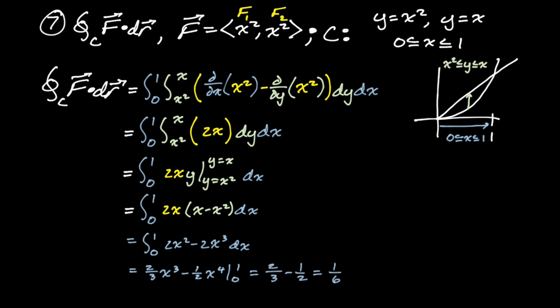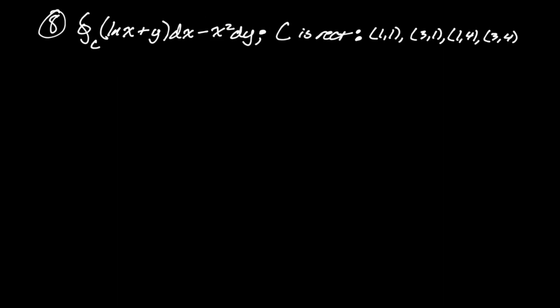Green's theorem just demolishes line integrals when it works well. You could get a hard double integral, but for the most part they tend to simplify quite a bit — and these tend to be line integrals you just would not want to deal with any other way. Alright, let's look at the next one.